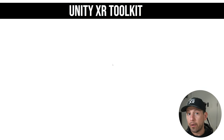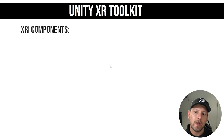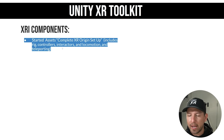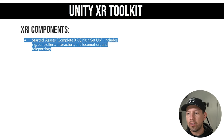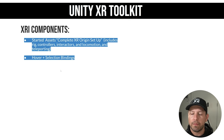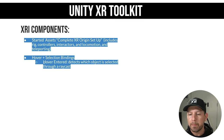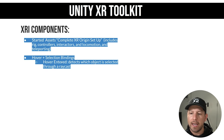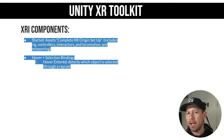For the XRI components I'm using, I used the starter assets with the complete XR origin setup. This is really cool because it comes with a rig, controllers, interactors, and locomotion — basically you get the whole package so you don't have to set things up from scratch. I also bound to different selections on the ray interactor, and the cool thing is it allows me to detect which object I'm currently pointing at. That's really helpful because if I'm pointing at the floor or at a frame, I want to make sure I have logic that handles how to map those correctly.